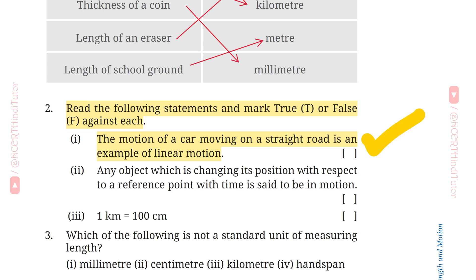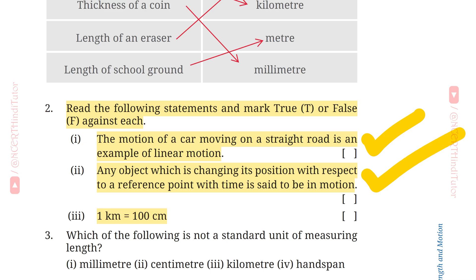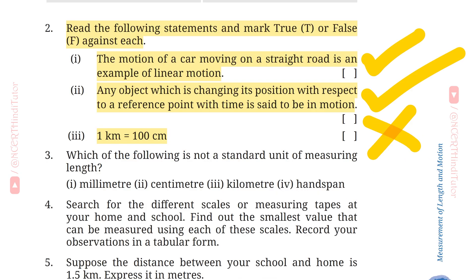Second: Any object which is changing its position with respect to a reference point with time is said to be in motion. This is also True and correct. Third: 1 kilometer is equal to 100 centimeters. This is False — incorrect. 1 kilometer is equal to 1000 meters.